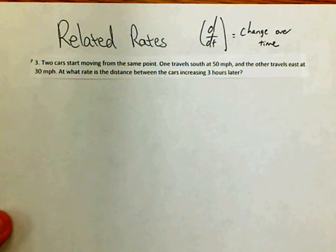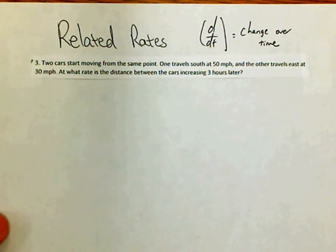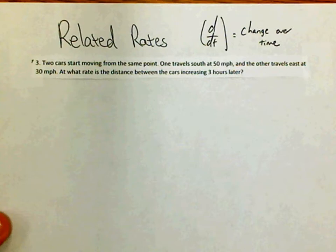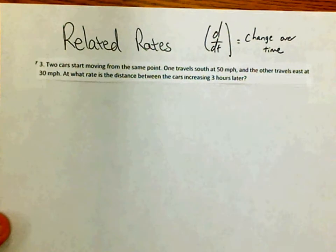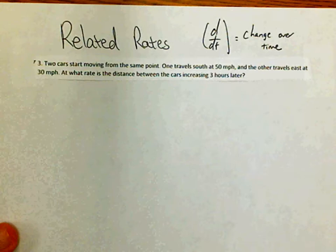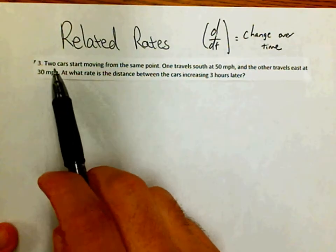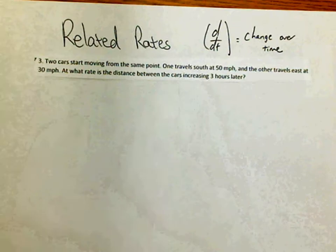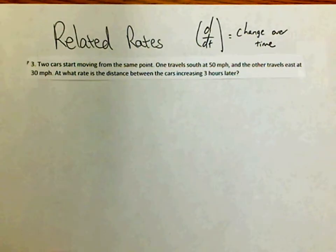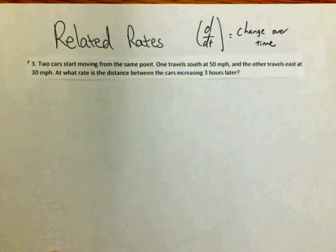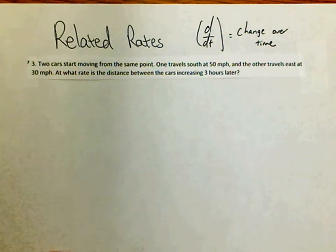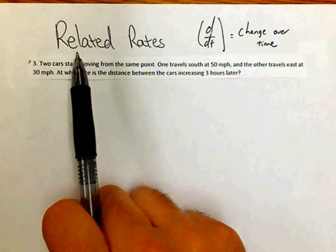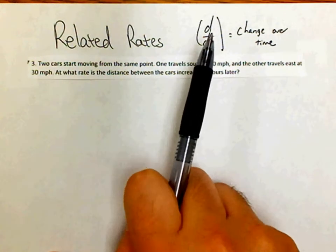We're going to do a related rates problem together — this is number three from our homework. We have two cars that start moving from the same point: one travels south at 50 miles per hour and the other travels east at 30 miles per hour. We want to know the rate at which the distance between the cars is increasing three hours later.